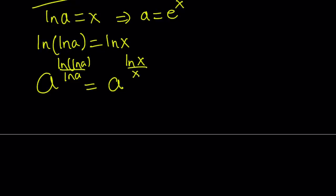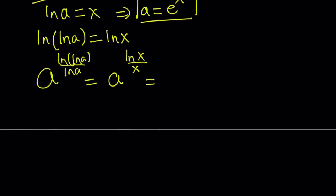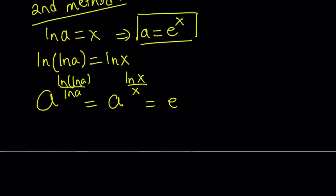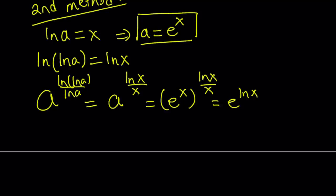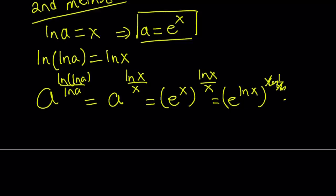Notice that a can be written as e to the power x, so let's substitute that. This gives us e to the power x, to the power ln x over x. One thing that will be helpful here is to bring the ln x inside as an exponent and leave the x outside, but x is going to be multiplied by 1 over x, so they cancel out. And we end up with e to the power ln x, which is x.